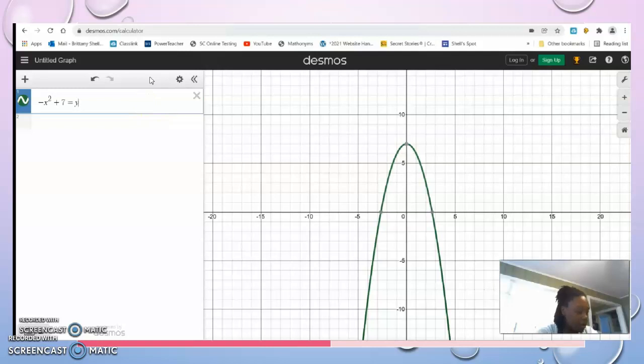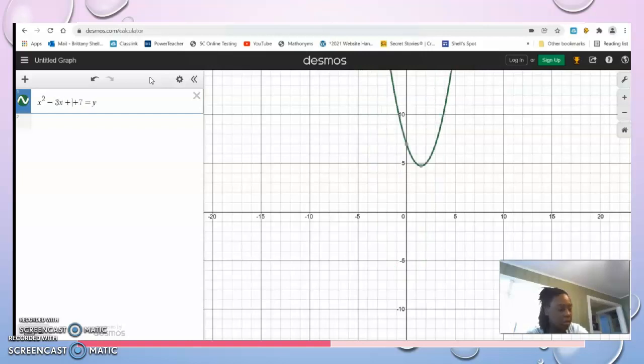For Example 4 we have x² - 3x + 10. So there's your graph. This one is no solution because it does not cross the x-axis, so there are no roots here.